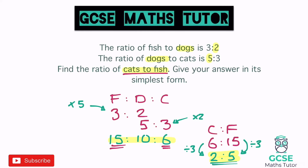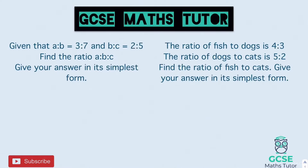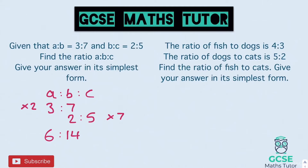Here's a couple for you to have a go at — pause the video and we'll go over the answers in a second. For the first one, A to B to C: we've got 3 to 7 and 2 to 5. The lowest common multiple of two and seven is 14, so times the top one by two and the bottom one by seven. We get six, then 14 in the middle, then 35 on the right — so six to 14 to 35. Checking: top ratio times two gives 6 and 14; bottom ratio times seven gives 14 and 35. That's fully simplified since we found the lowest common multiple.